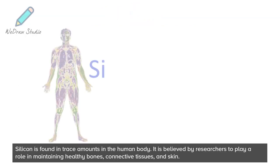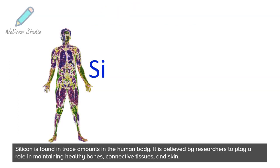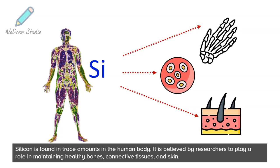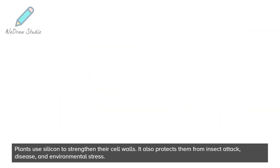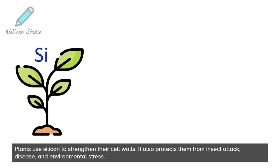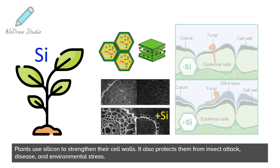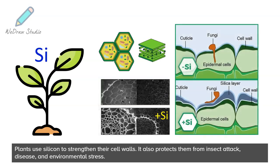Silicon is found in trace amounts in the human body. It is believed by researchers to play a role in maintaining healthy bones, connective tissues, and skin. Plants use silicon to strengthen their cell walls. It also protects them from insect attack, disease, and environmental stress.